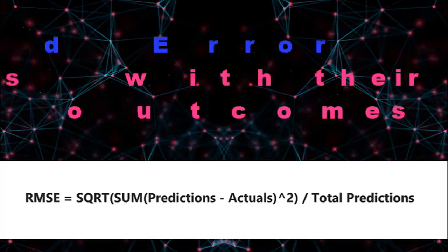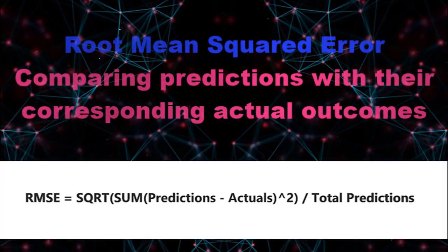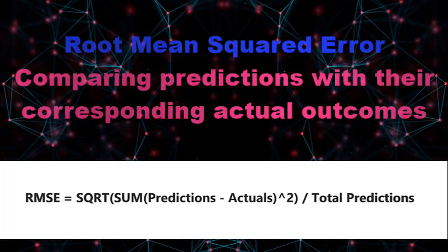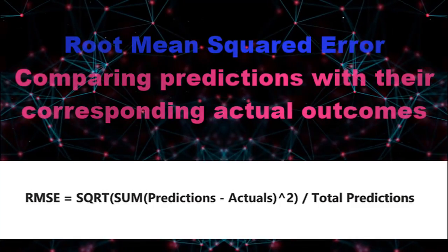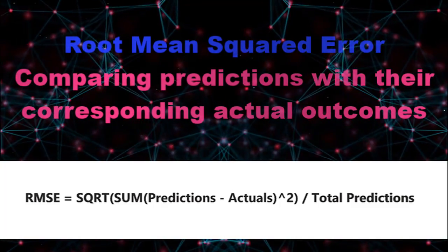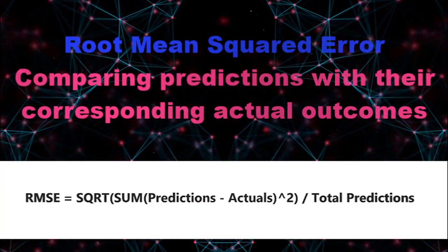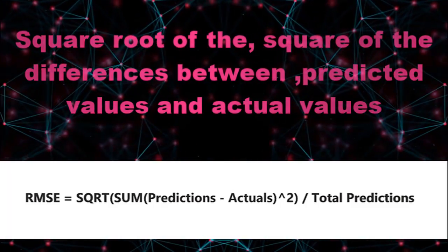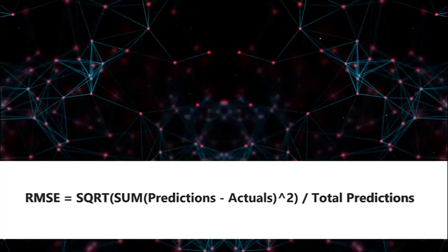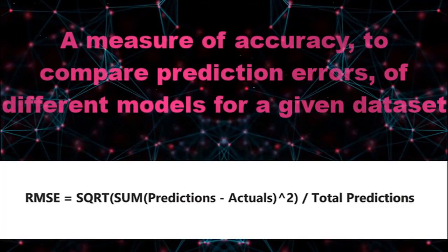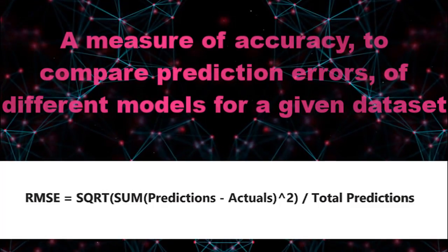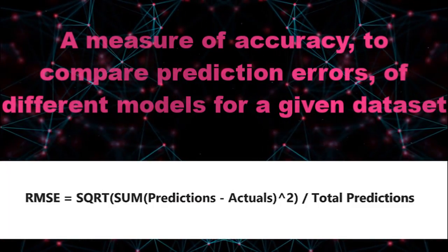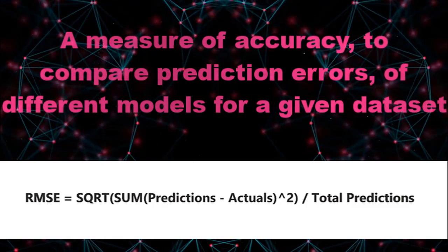Before proceeding with the technical implementation, let's discuss one more important concept: root mean squared error, or RMSE. RMSE is one of the ways of comparing predictions with their corresponding actual outcomes. It is a frequently used measure of the differences between values predicted by a model and the actual values. RMSE represents the square root of the mean of the squared differences between predicted and actual values. RMSE is a measure of accuracy used to compare prediction errors of different models for a given dataset, and it is scale dependent.